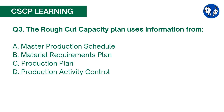Question number 3. The Rough Cut Capacity Plan uses information from: A. Master Production Schedule, B. Material Requirements Planning, C. Production Plan, D. Production Activity Control. The correct answer is A. The Rough Cut Capacity Plan uses information from the MPS to test the critical work centers to be sure the schedule is doable. If the MPS is able to be done at the critical work centers, then the schedule can be executed.